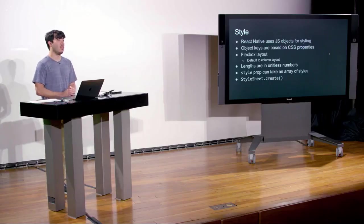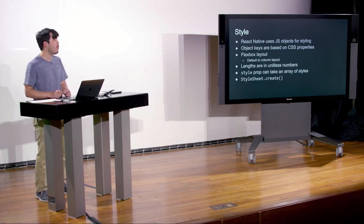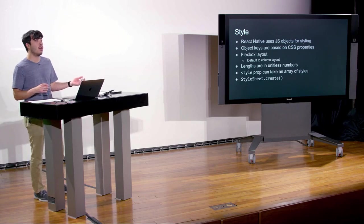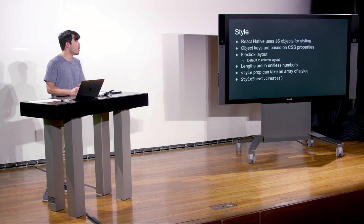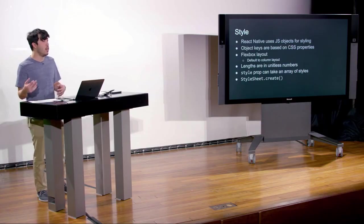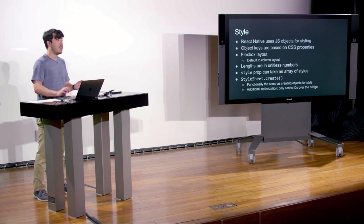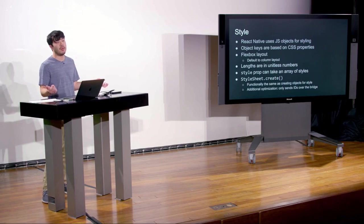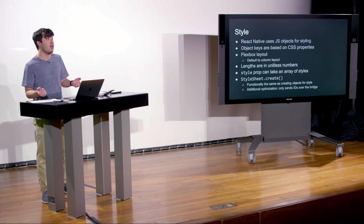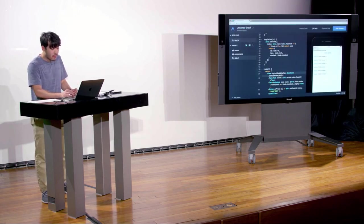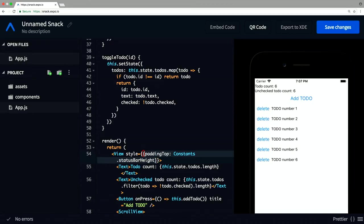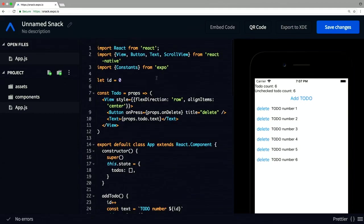There's a thing called StyleSheet, which is part of React Native and has some optimizations for styles. The way JavaScript communicates with the UI thread is through the bridge, meaning every time you want a view with a style you need to send those style attributes over the bridge. StyleSheet optimizes this — rather than sending the entire style object, we can only send IDs. The Facebook team created StyleSheet so you declare your styles outside the component using StyleSheet.create(), passing an object where the keys map to how you'll use the styles later.